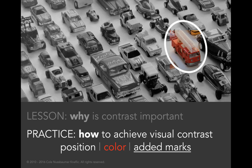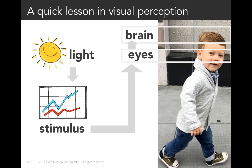So we want to try to avoid that when there is a story that we're telling with our data. Let's talk more about how we can achieve this visual contrast when communicating with data. First, let's talk for a moment about how people see. This is a very simplified picture of that process.